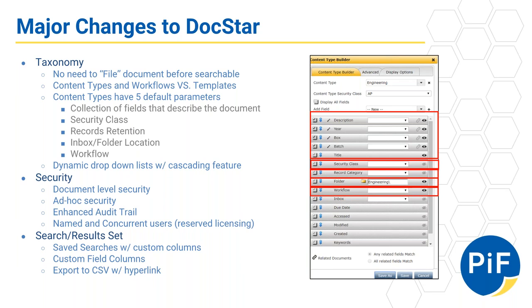The content type also selects what folder or inbox location, the default security class, the fields that describe the document, as well as any records retention record category. So when we go to capture, we only select the content type, and that will then pre-define everything else.